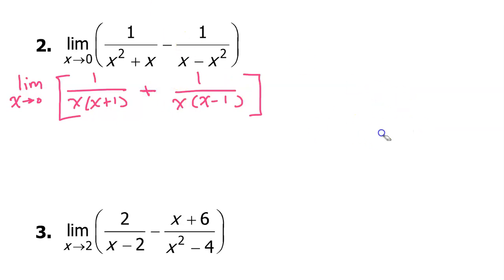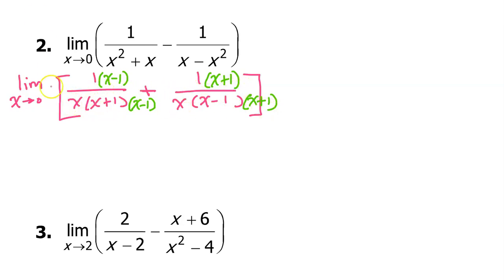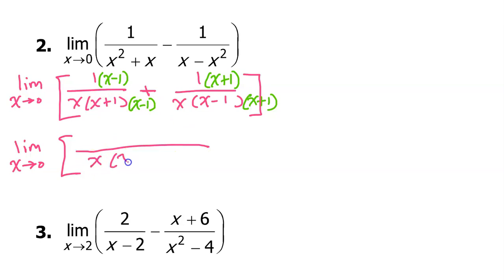To combine into one fraction we need like denominators. The right-hand denominator has x minus 1, so we give the left denominator an x minus 1 — but only if we also put x minus 1 in the numerator. The right denominator needs x plus 1 to match the left, and we add x plus 1 in that numerator as well. Now we have like denominators and can combine: the denominator is x(x+1)(x-1), and the numerator combines as (x minus 1) plus (x plus 1).